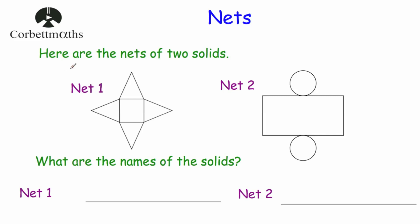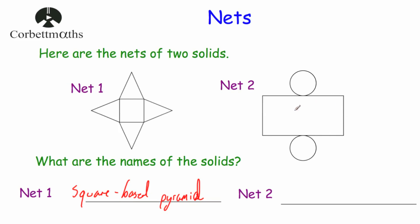Next question: here are the nets of two solids — what are the names of the two solids? Net one has a square base with four triangles folding upwards, so that is a square-base pyramid. Net two has a rectangle which folds around to be the curved face of a cylinder, plus a circle for the top and a circle for the base — so that is the net of a cylinder.